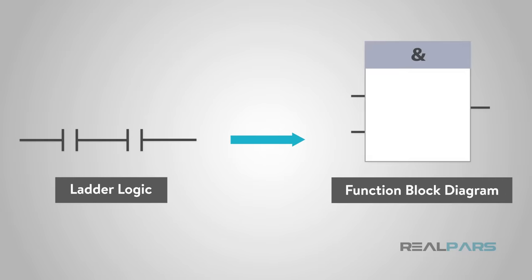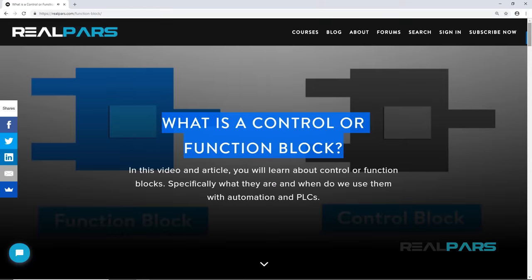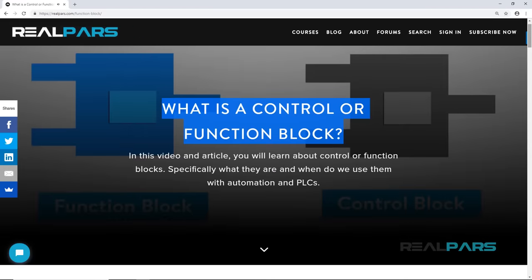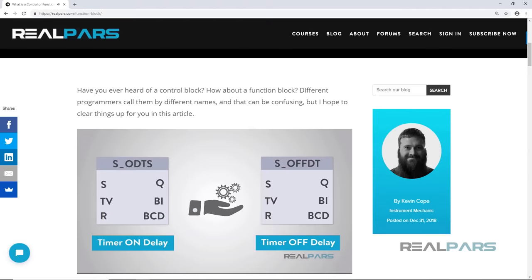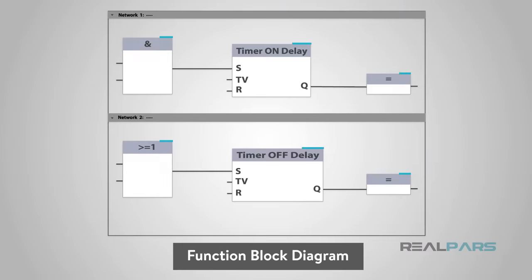Function block diagrams can essentially convert several lines of ladder logic into boxes. In the middle of the function block will be a symbol or text labeling the function block. This will describe the actual function of the block. There can be one or several inputs and an output for each function block. Those function blocks can be inputs to other function blocks as well.